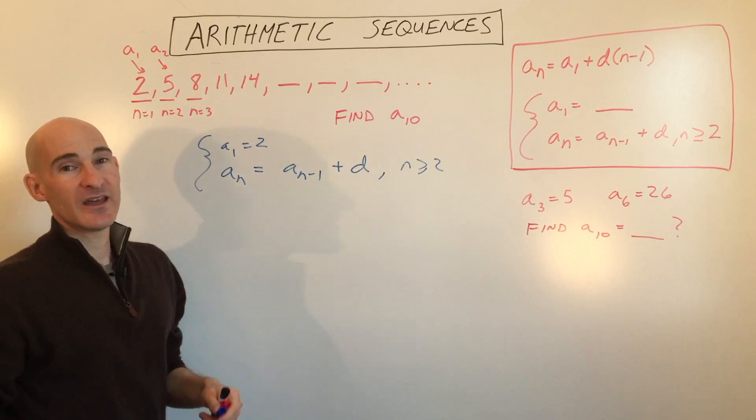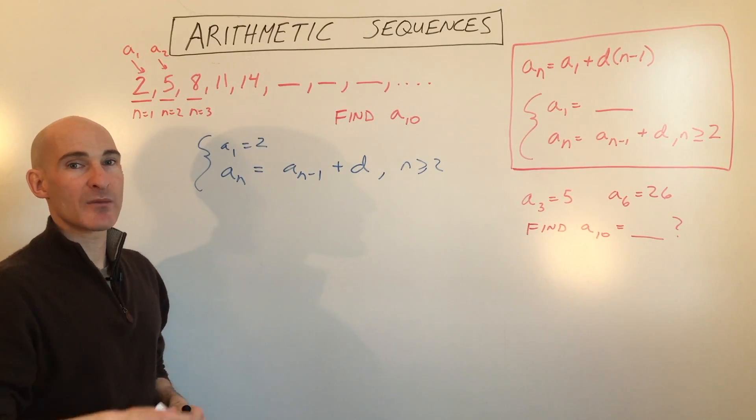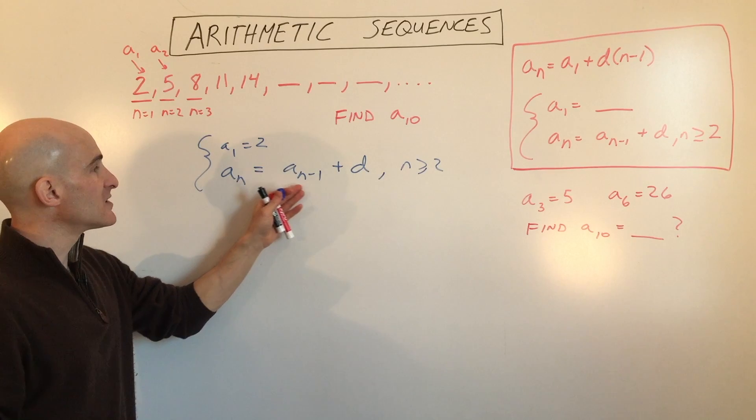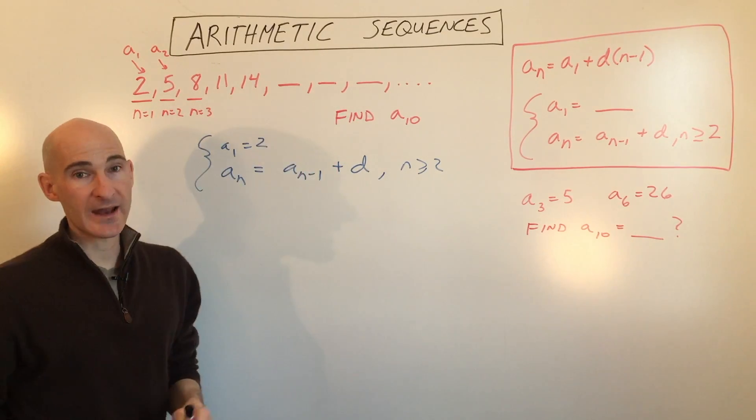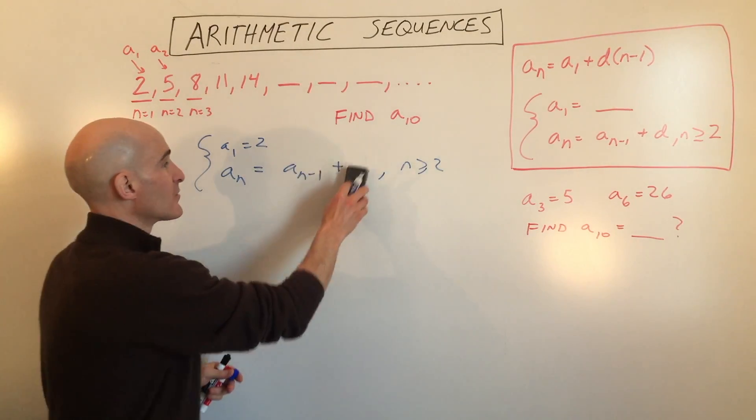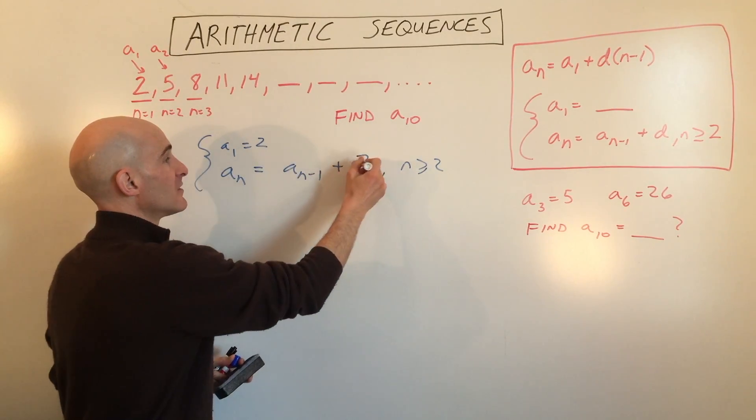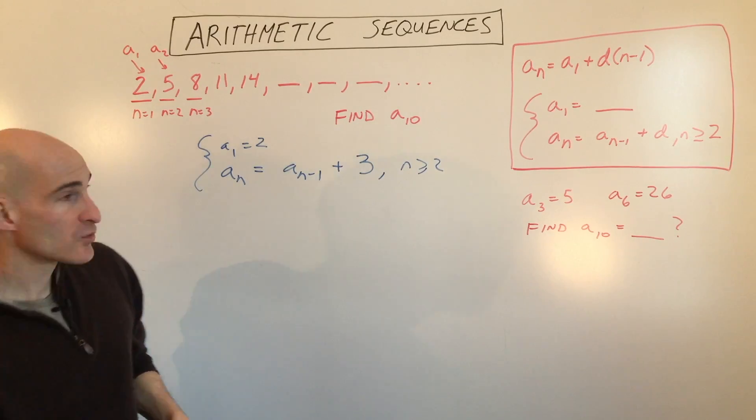If you were multiplying, then that's a geometric sequence. We'll talk about that in another video. So in this video, what we're talking about is adding, in this particular example, we're adding 3. So what I'm going to do is, instead of having d here, I'm going to replace that with the common difference of 3, and the way this works is,